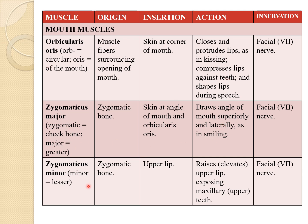The next is the zygomaticus minor. It also originates at the zygomatic bone and inserts at the upper lip. Its action is to raise or elevate the upper lip, exposing the maxillary teeth. It is also innervated by the facial nerve.